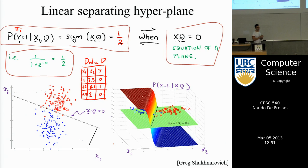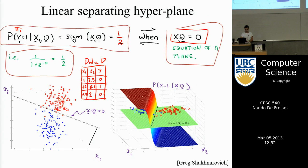That gives us the mechanism for doing classification. The equation sigmoid of x_i theta equal to half is equivalent to x_i theta equal to zero, which is just the equation of a line — the equation of a plane in general. So logistic regression gives you a linear separating discriminant function. When x_i theta is positive, you get class 1; when x_i theta is negative, you get class 0.